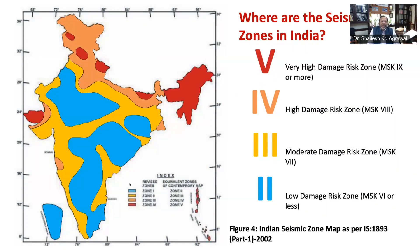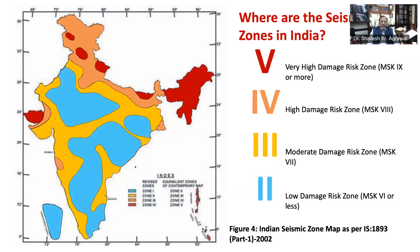The blinking area shown is Zone 5. As you can see, the northeastern region, some part of the Himalayan region, and in the west the Gujarat region falls in Zone 5 — it is called the very high damage risk zone. Zone 4, Zone 3, and Zone 2 is shown in blue. This is the seismic zoning map of our country based on Indian Standard 1893, 2002.